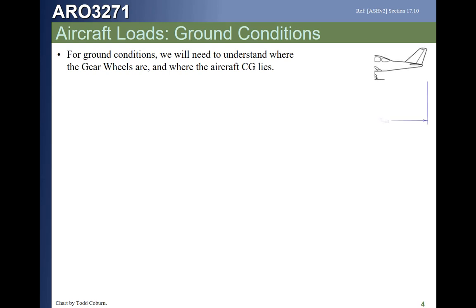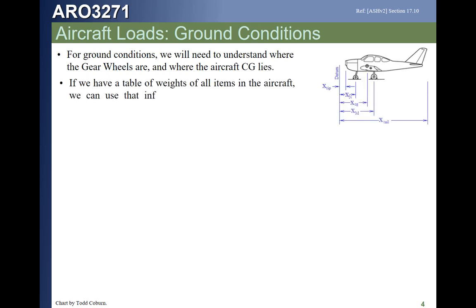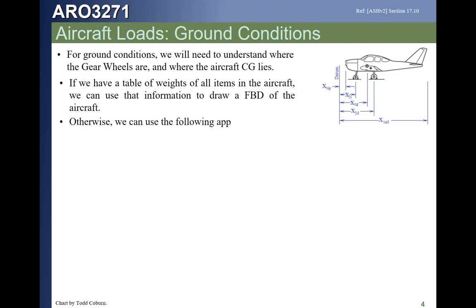When analyzing a ground condition, we just need the max gross weight and we'll need to know where the landing gears are — that's what reacts the load. We need to be careful to note whether we have one or two landing gears. In this case, it looks like we have two gears, but this probably has a single nose gear and two main gears. We can draw a free body diagram and sum our forces to calculate the distribution of loads.